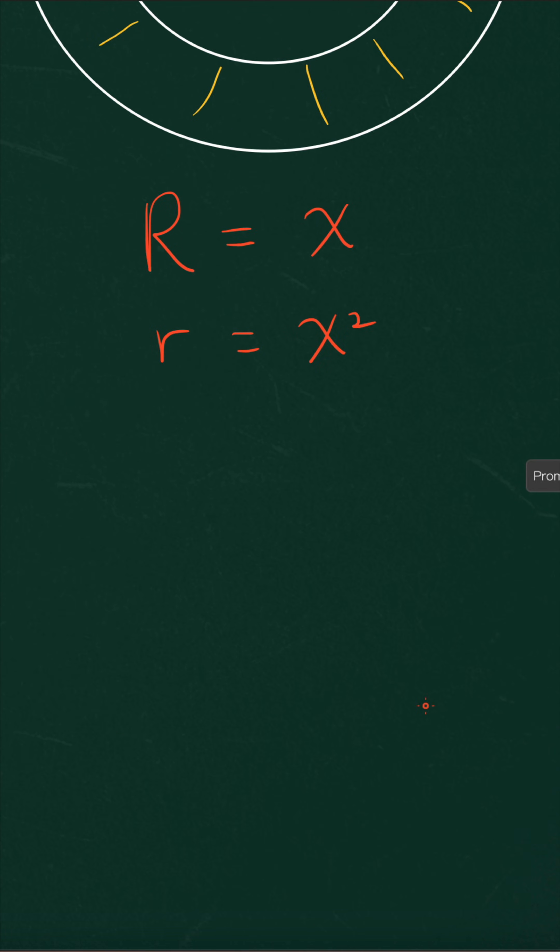All right, now we have the radius and it's pretty easy for us to get the area of the ring. A actually is equal to pi big R squared, which is x squared minus pi times small r squared, which is x raised to the power of 4.